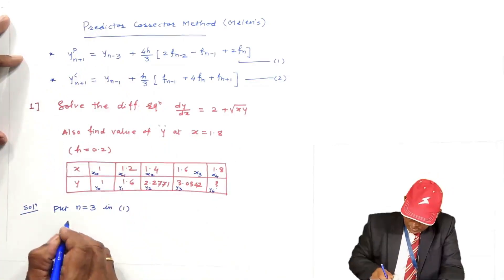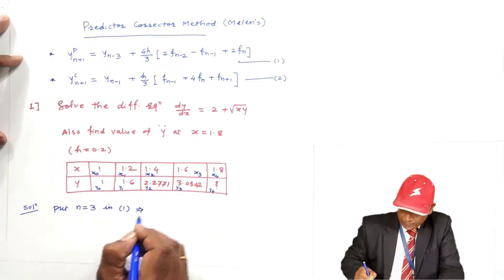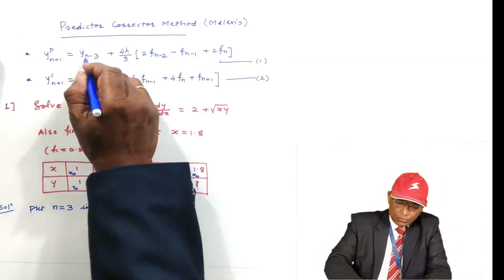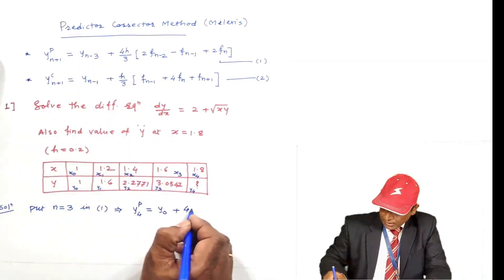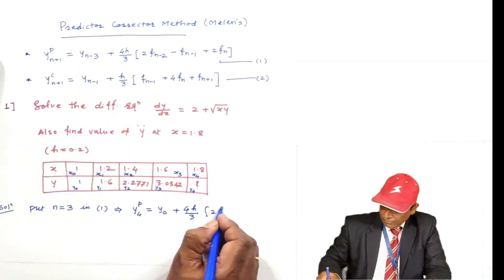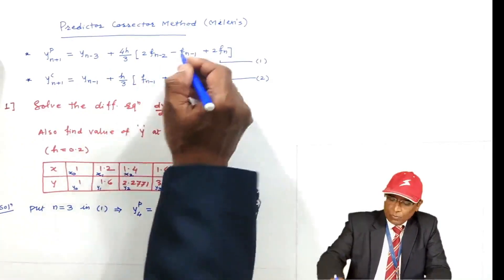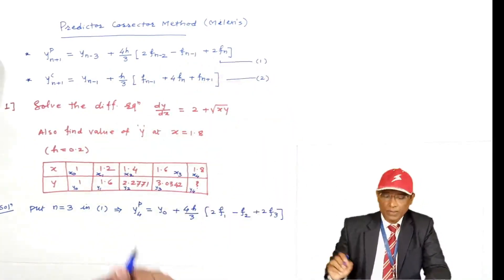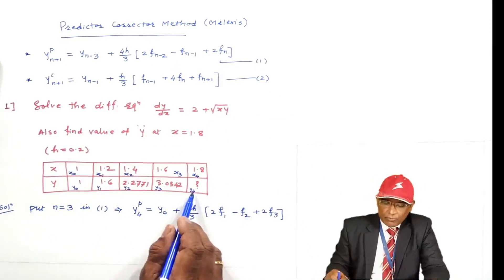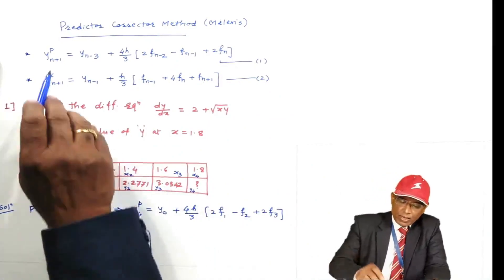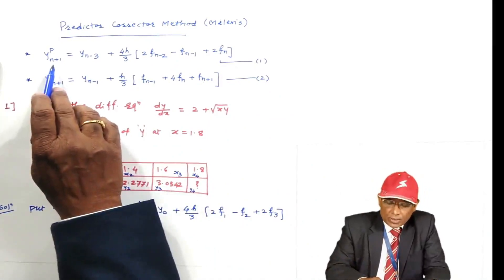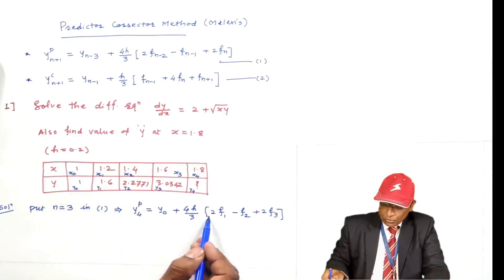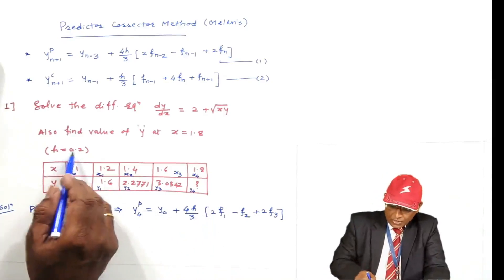Putting N = 3, equation 1 gives Y4P. The value of H is not 3 — H = 0.2 as given. The difference between consecutive X values (1.0, 1.2, 1.4, 1.6) is 0.2, confirming h = 0.2. Now it remains to find the values of F1, F2, and F3, which I will calculate separately.